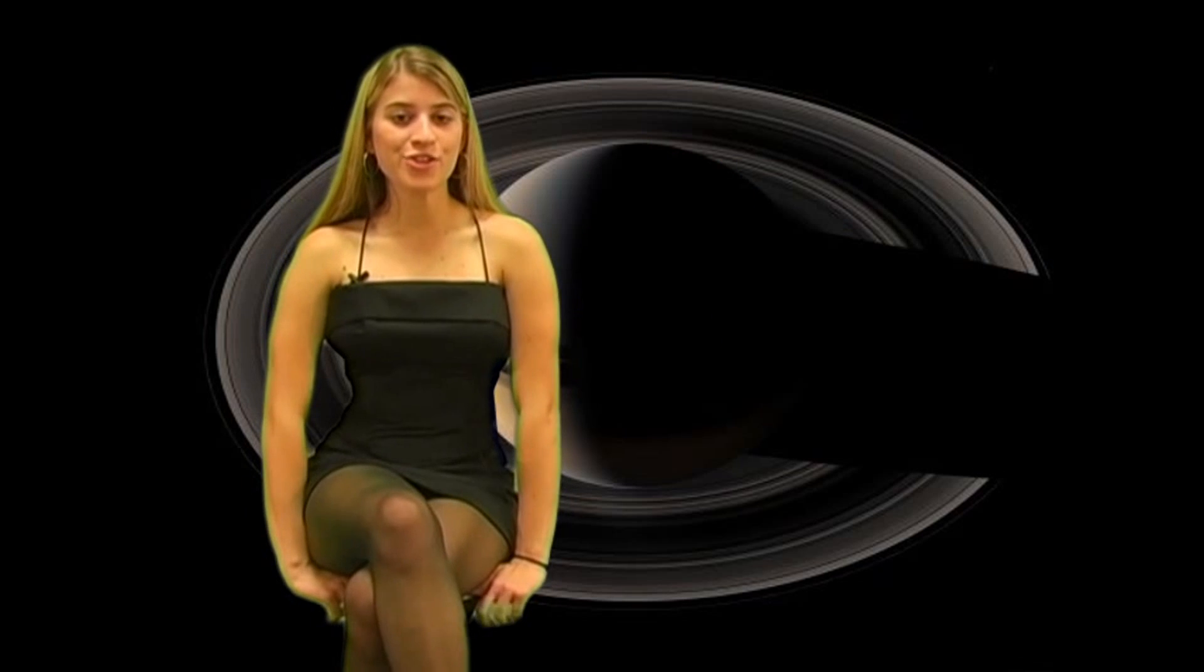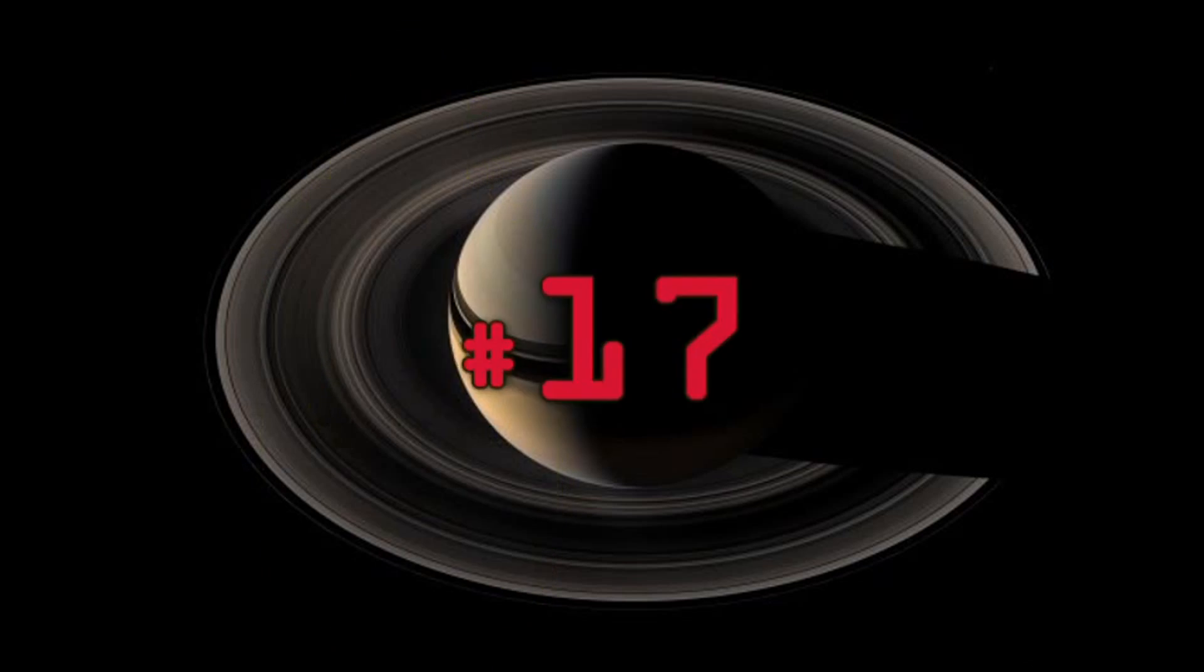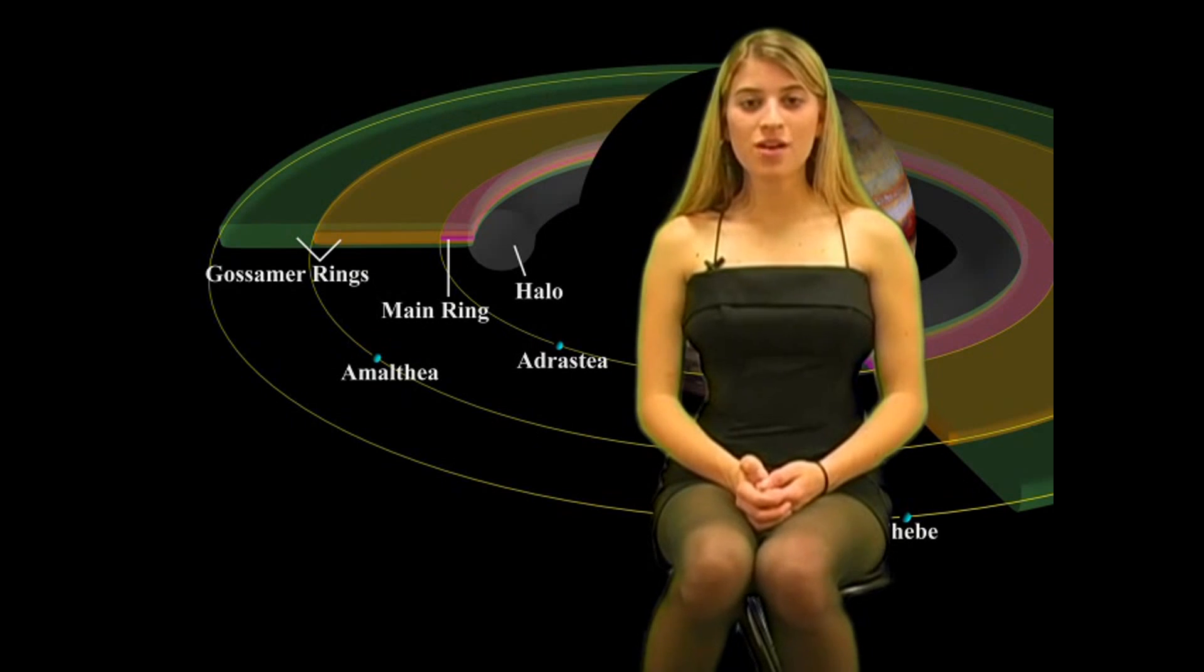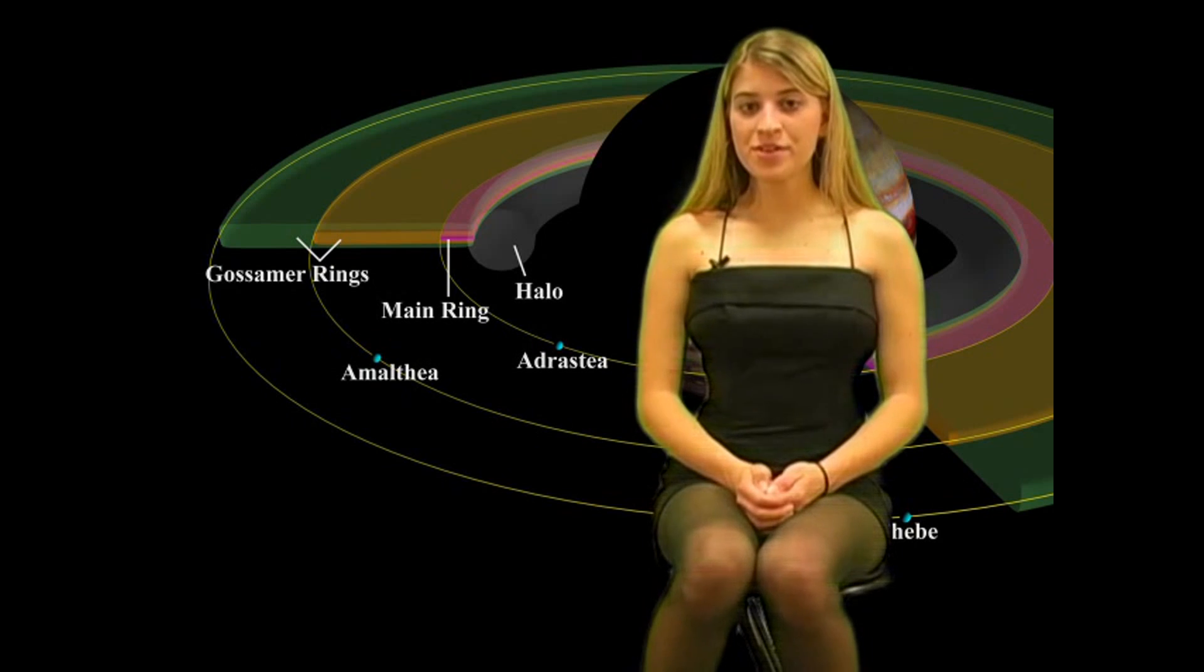Like Saturn, Jupiter has rings around it, made up of dust and tiny meteoroids. Jupiter has four rings around it, but only three are visible. The visible ones are called gossamer, halo, and the inner ring.